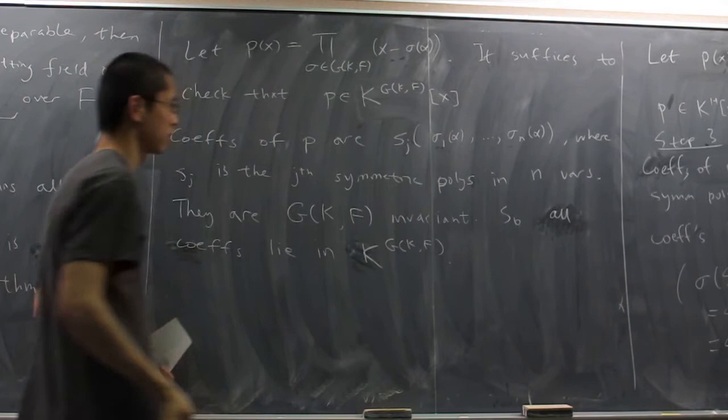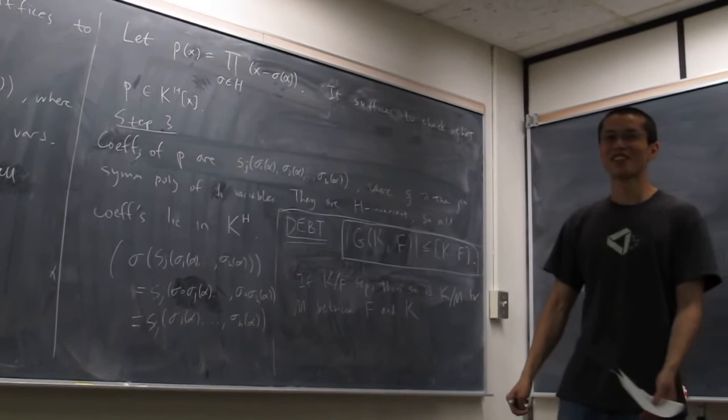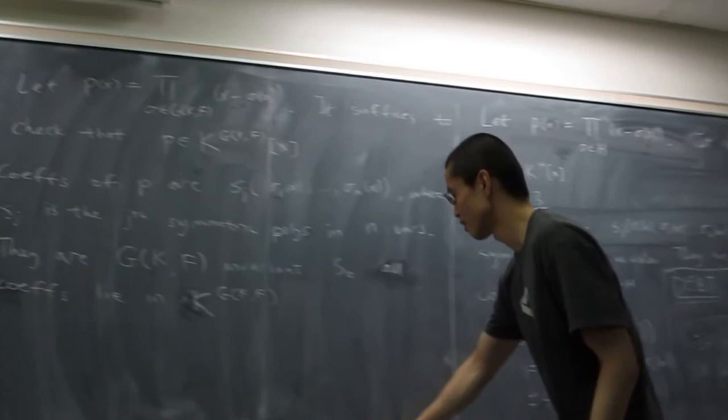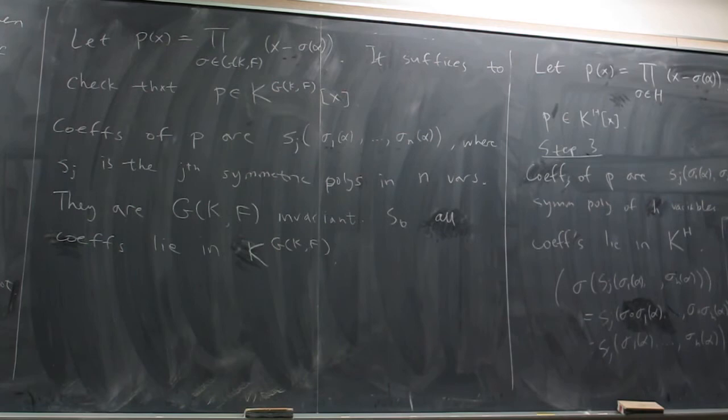Now let's see how similar this board is to the previous one — they are actually exactly the same proof. You can interpret P as a characteristic polynomial of a linear map. The constant term is like the field norm of α — you multiply all the Galois conjugates together. You can also get the field trace on the second-to-last term.